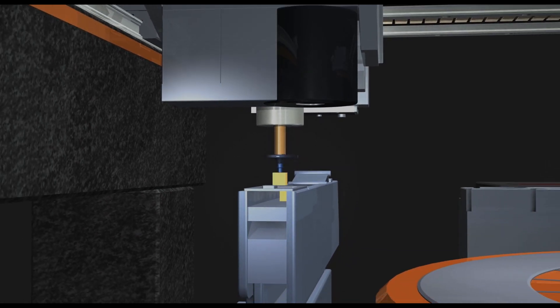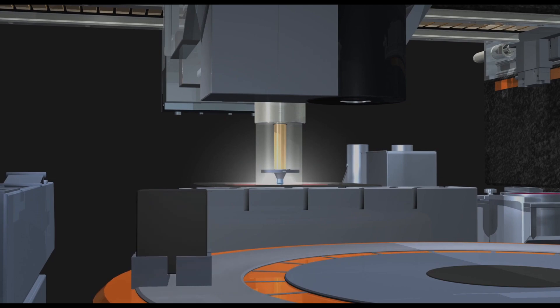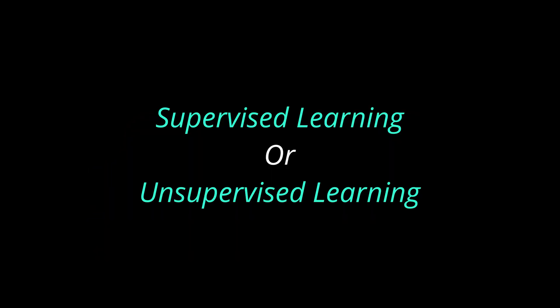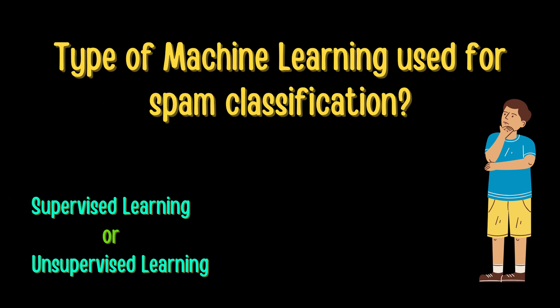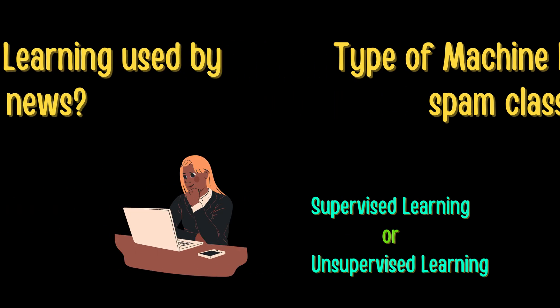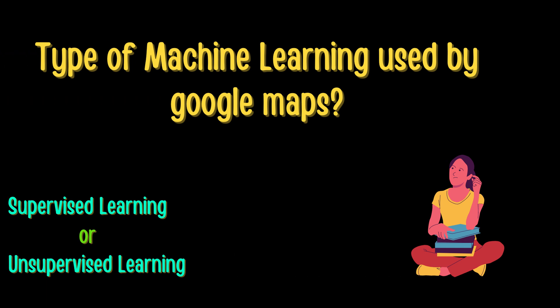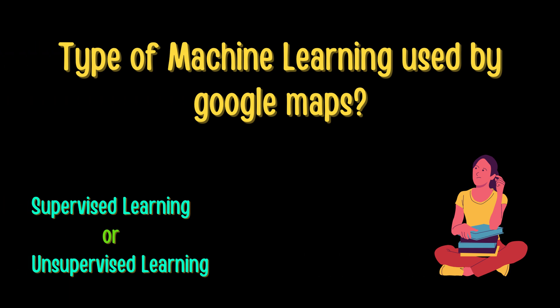I hope you got an idea about the different machine learning techniques. Here are some questions: let me know in the comments whether each uses supervised or unsupervised learning. Gmail uses an algorithm that learns keywords such as 'price', 'money', 'winner' to filter out spam emails — what type of machine learning is used? Google News aggregates articles from different publishers — what kind of machine learning is used? And what kind of machine learning does Google Maps use to predict traffic and estimate travel time?